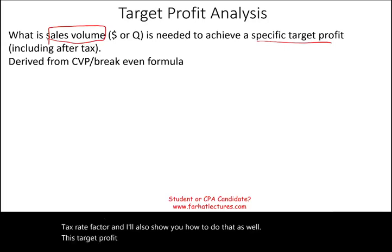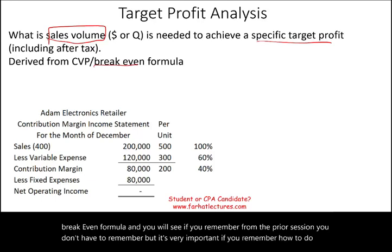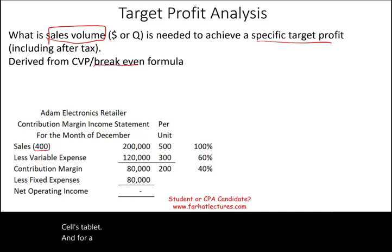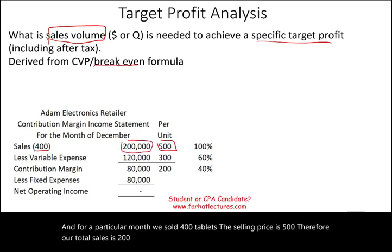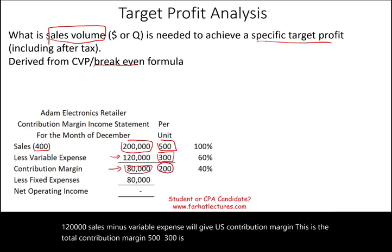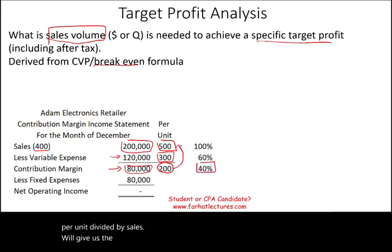This target profit analysis is derived from the cost-volume-profit analysis and the break-even formula. We're working with Adam Electronics, a retailer that sells tablets. For a particular month, they sold 400 tablets at a selling price of $500, giving total sales of $200,000. Variable expense is $300 per unit times 400 units, equaling $120,000. Sales minus variable expense gives the contribution margin. The contribution margin per unit is $200 (500 minus 300), and the contribution margin ratio is 40%. Total contribution margin is $80,000.